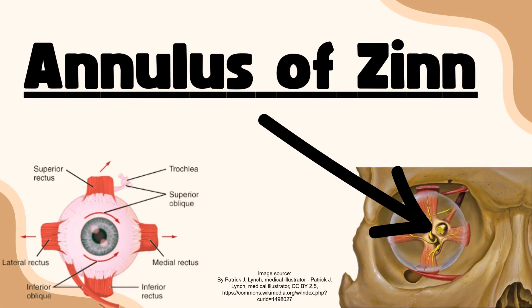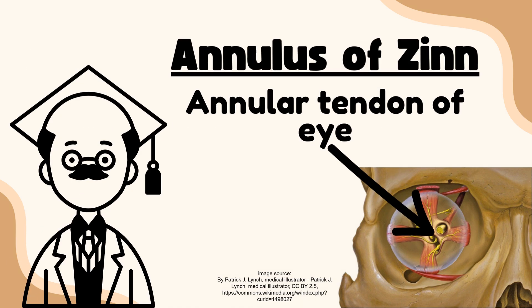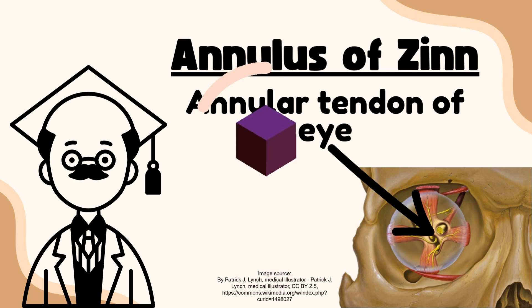Annulus of Zinn, also known as the annular tendon of the eye. Today we are diving into a fascinating topic in the anatomy of the eye — the Annulus of Zinn. Let's begin.